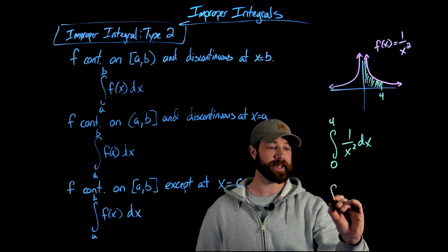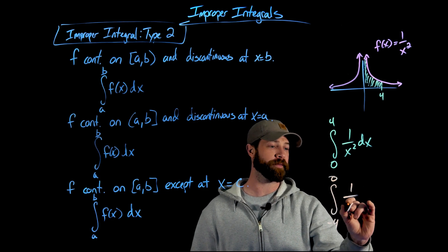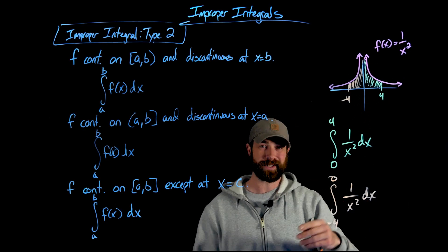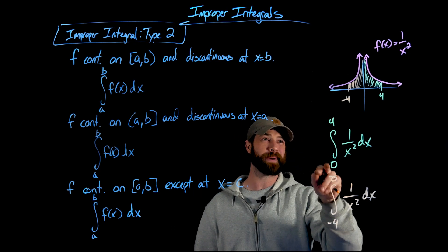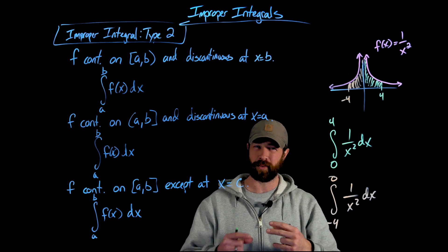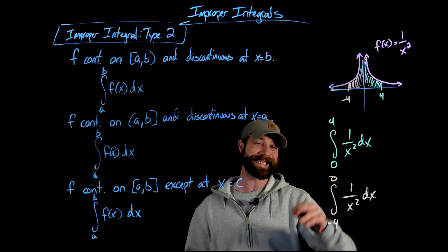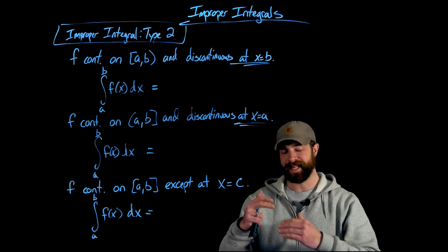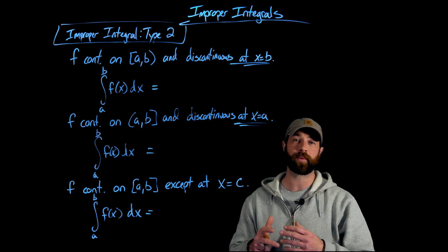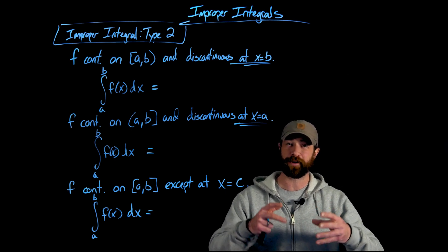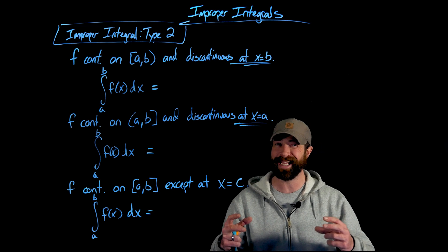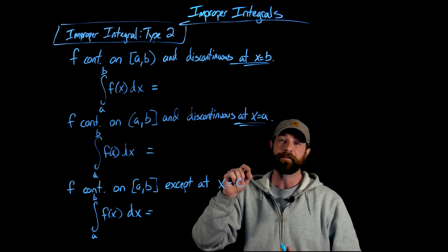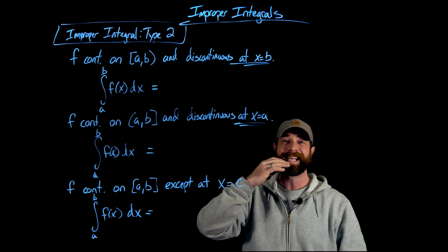In the same way, if we took the definite integral from -4 to 0 of 1/x² dx, these are regular finite values. The issue is that one of these bounds — or in the third type, a value within the interval — is a discontinuous point, in this case at zero. Just like we did with the other version of improper integrals, it's important to understand that our definite integral only works where f is continuous. The definition for an integral is based on the fact that f is continuous from a all the way to b, including a and b.